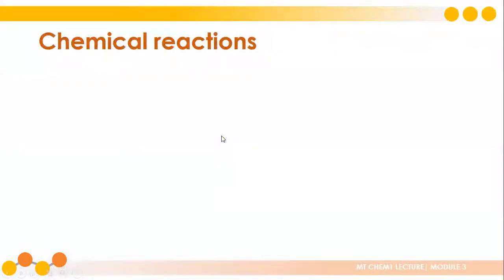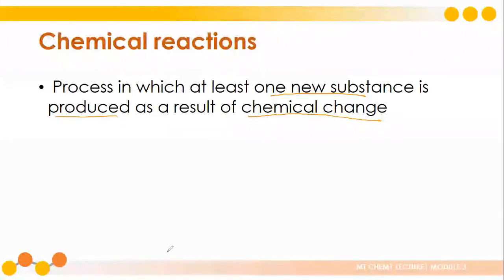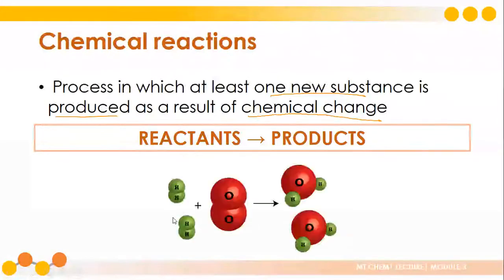What are chemical reactions? Chemical reactions is a process in which at least one new substance is produced as a result of a chemical change. You have to remember that during a chemical change, there are chemical reactions that occur. At least one new substance is produced. When we were balancing equations, we kept on talking about reactants and products.